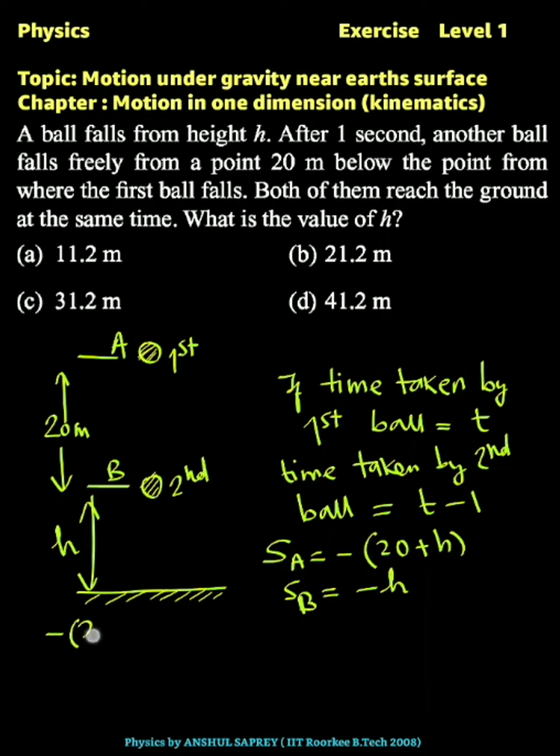So we can use minus (20 plus h) equals ut plus half a t squared. U is zero and acceleration is minus g, so minus g by 2 times t squared. This is the first equation for the first ball.